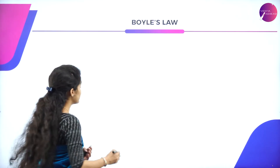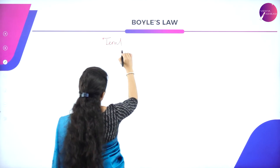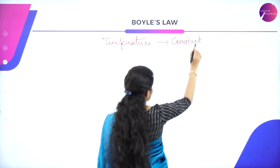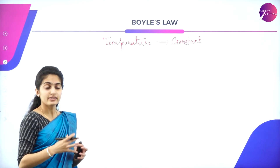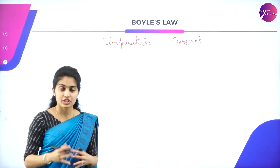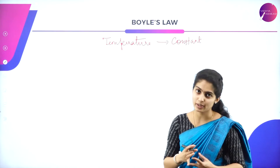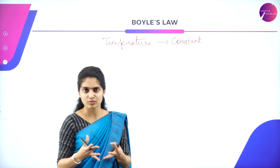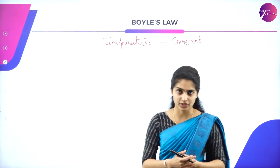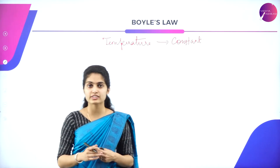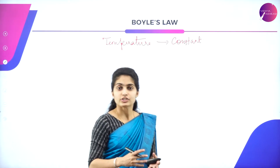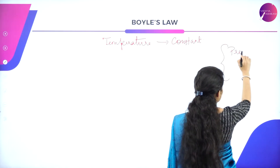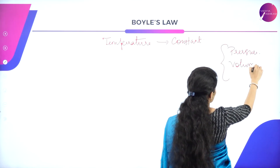In Boyle's law, we consider temperature to be constant. A gas always deals with certain components — pressure, volume, and temperature. When temperature changes, there will be changes in pressure and volume. When pressure increases there will be a change in volume. All three are linked to each other, related through Boyle's law, Charles' law, and Gay-Lussac's law. With temperature constant, we are left with pressure and volume.